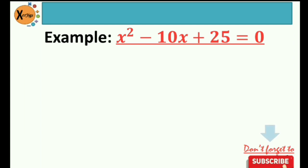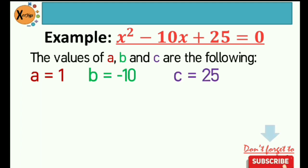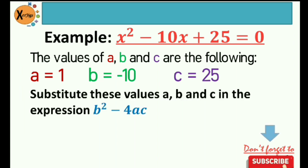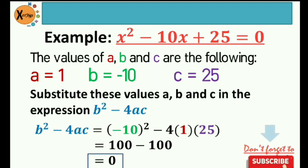Example: x squared minus 10x plus 25 is equal to 0. The first thing we need to do is identify the values of a, b, and c. In our example, the value of a is positive 1, b is negative 10, and c is positive 25. After getting these values, you need to substitute them into the expression b squared minus 4ac, your discriminant.